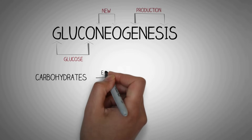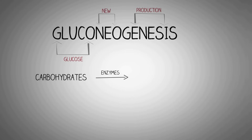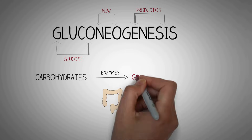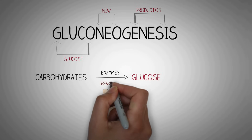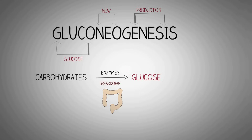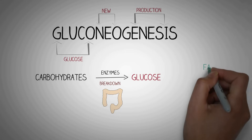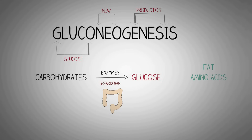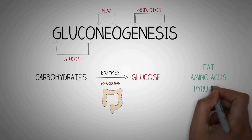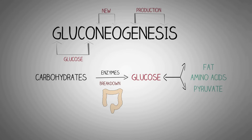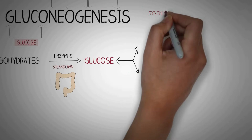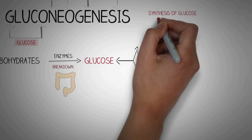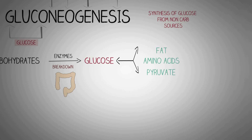Under normal circumstances, carbohydrates are broken down in the human body by various enzymes into glucose. But under special circumstances, substances like fat, amino acids, and pyruvate are converted into glucose — the production of glucose from new sources. Thus, gluconeogenesis can be defined as the synthesis of glucose from non-carbohydrate sources.